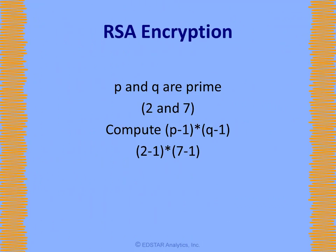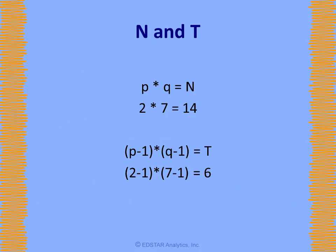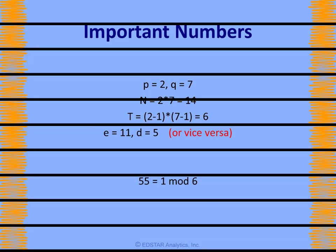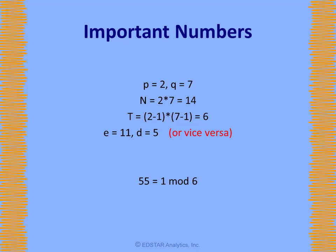Here is how RSA public key cryptography works. You start with two prime numbers, P and Q. Let's use 2 and 7 in this example to make it easier to follow. The product of P minus 1 and Q minus 1 also plays a role. We need to compute two numbers that we are going to call N and T. The numbers we need are N equals 14 and T equals 6. So T equals 6, therefore we need a number and its inverse mod 6. There are actually an infinite number of choices we could make. Let's use E equals 11 and D equals 5.